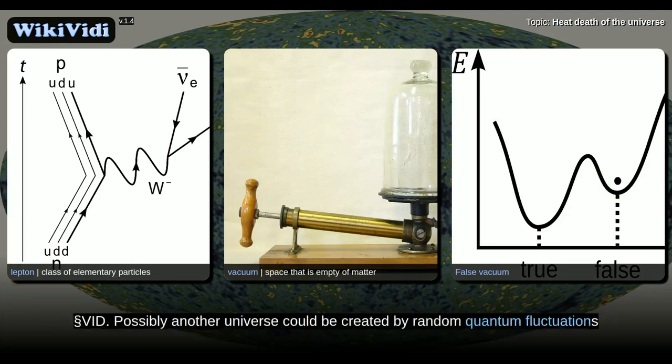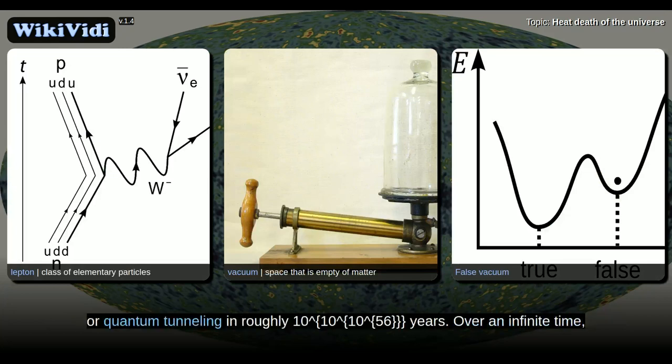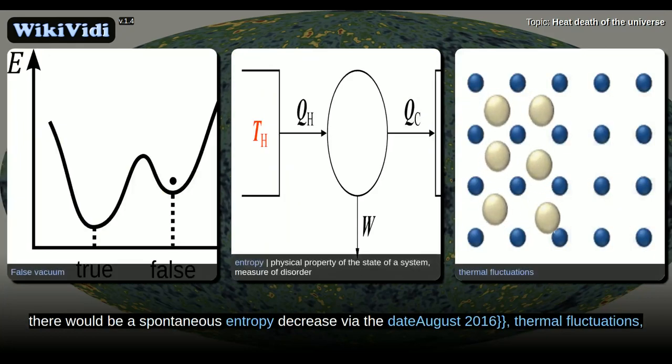Possibly another universe could be created by random quantum fluctuations, or quantum tunneling in roughly 10^10^10^56 years, over an infinite time. There would be a spontaneous entropy decrease via thermal fluctuations.